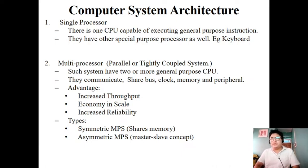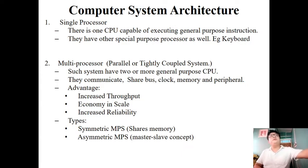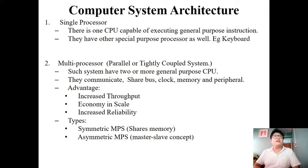In the case of a multiprocessor system, as the name suggests, it has more than one CPU and can execute more than one task at a time based on the number of processors available. The multiprocessor computer system is also known as a parallel computing system or tightly coupled system. It is called parallel because it can execute more than one general-purpose instruction at the same time.